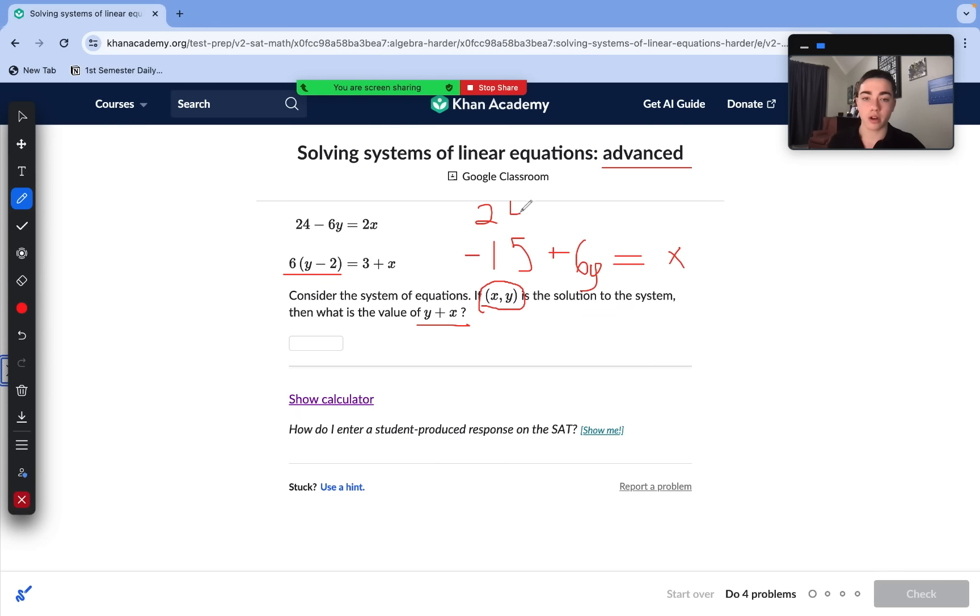Let's write them on top of each other and we can see clearly here that our y variables can just eliminate each other. We have our negative 6y and our positive 6y. So let's go ahead and combine. Those cancel out. 24 minus 15 is 9 and then 2x plus x is 3x. We'll have 9 equals 3x. Divide both sides by 3. x equals 3.